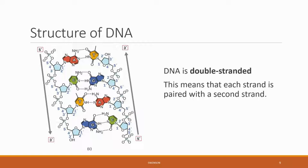Look at the very top of the structure and you will see a five prime in a red box. This means that the phosphate on this end is bound to the fifth carbon of ribose. At the very bottom, in the first strand, is a three prime in a red box. That means that this end of the strand is where we would attach a phosphate to the third carbon. In a sense, DNA has a direction to it, just like driving down a one-way street would.